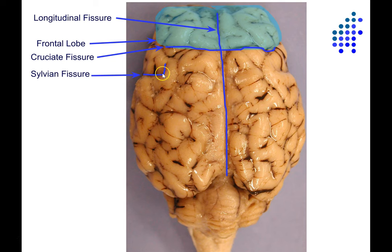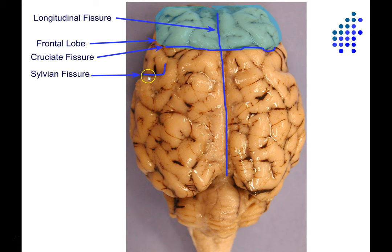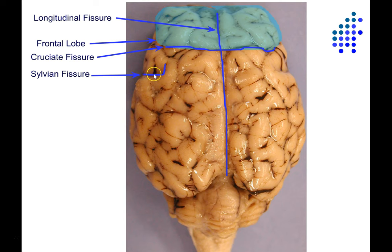Here we've got the sylvian fissure. It doesn't look like much in this view, but on the lateral view and when you start cutting the brain, it's a very deep and pronounced sulcus. This is one of the few sulci conserved across species — pretty much every mammal that has convolutions in its brain has this sulcus, making it evolutionarily very old. Everything in the brain is bilateral, so you'll find the same structure in the same place on both sides. The brain is organized with bilateral symmetry.